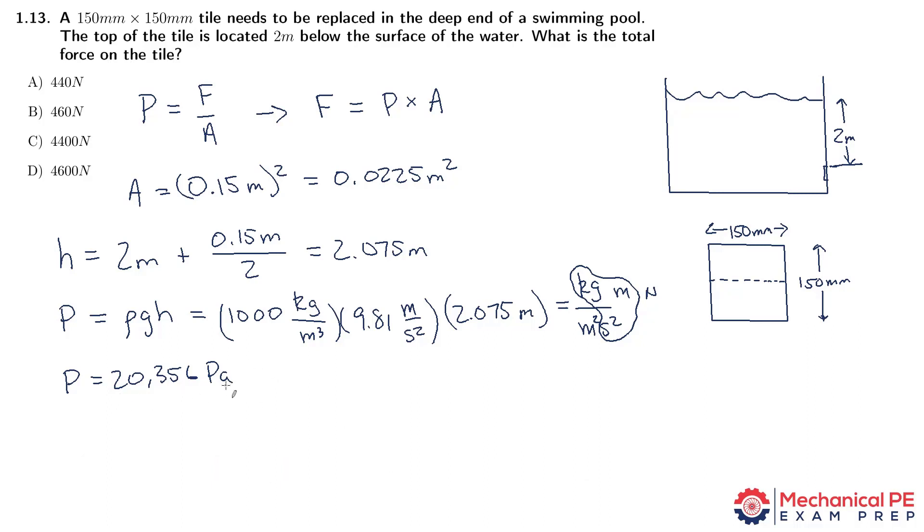So that's the average pressure. And now all we're gonna do is come back up to this formula here and calculate the total force on the tile. Force is average pressure times area. So 20,356 Pascals. You could write it as Pascals, or you might even want to write it as newton per meter squared, which is what a Pascal is, since we're going to be multiplying that by area now. And area is 0.0225 meters squared. It's nice to do it that way. We can see meters squared cancel out and we'll get the final answer in newtons to match up with the answer choices. 458 newtons is closest to answer choice B.